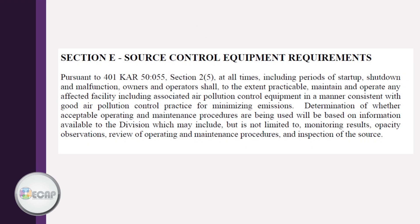Section E covers control equipment requirements. Different types of control equipment include scrubbers, afterburners, thermal oxidizers, and more. Be sure to check this section for monitoring, record-keeping, and reporting requirements.